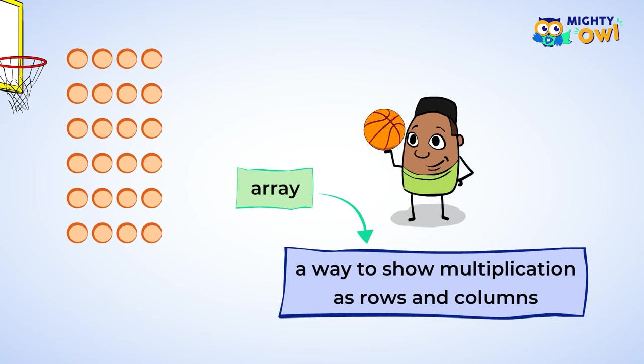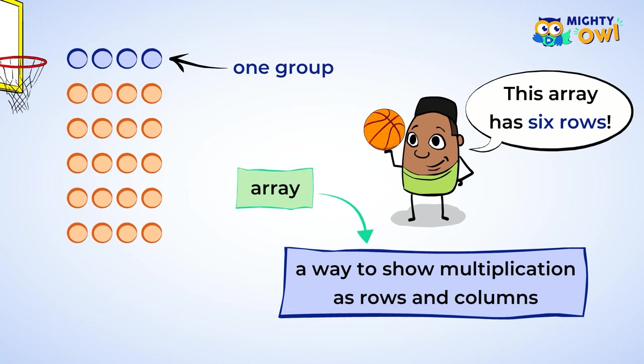An array is a way to show multiplication as rows and columns. To construct an array, there needs to be a row for each group. Since your class has six groups, this array has six rows.